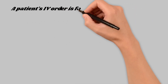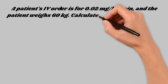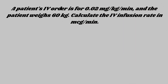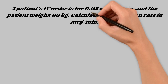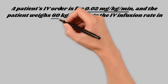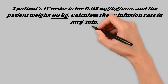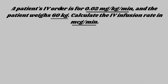Let's look at another question. A patient's IV order is for 0.02 mg per kg per minute, and the patient weighs 60 kg. Calculate the IV infusion rate in micrograms per minute. Just like before, we're going to go through the same habits. We'll underline 0.02 mg per kg per minute, 60 kg, and then we're looking for micrograms per minute — we'll put that with a question mark so we know when we're done we need to have micrograms over minutes, otherwise we're not done yet.